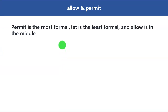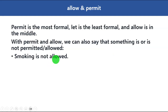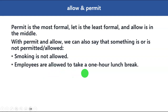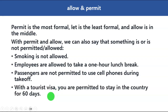'Permit' is the most formal, 'let' is the least formal, and 'allow' is somewhere in the middle. With permit and allow, we can also say that something is or is not permitted or allowed. For example: smoking is not allowed; employees are allowed to take a one-hour lunch break; passengers are not permitted to use cell phones during takeoff; with a tourist visa you are permitted to stay in the country for 16 days.